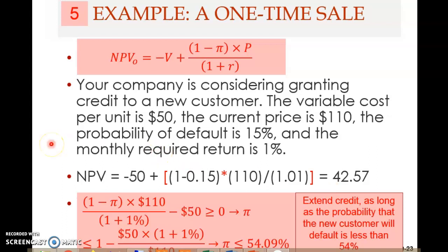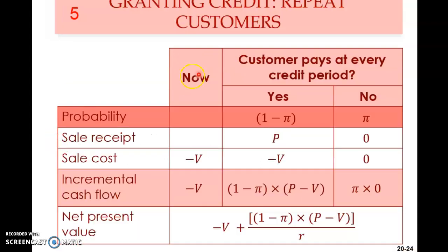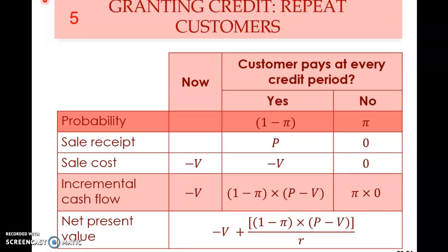Now we move on to a related problem. We look at the same analysis of granting credit, but this time for a repeat customer. Previously it was a one-time sale; now it is a repeat sale — meaning you sell to the same customer again and again.